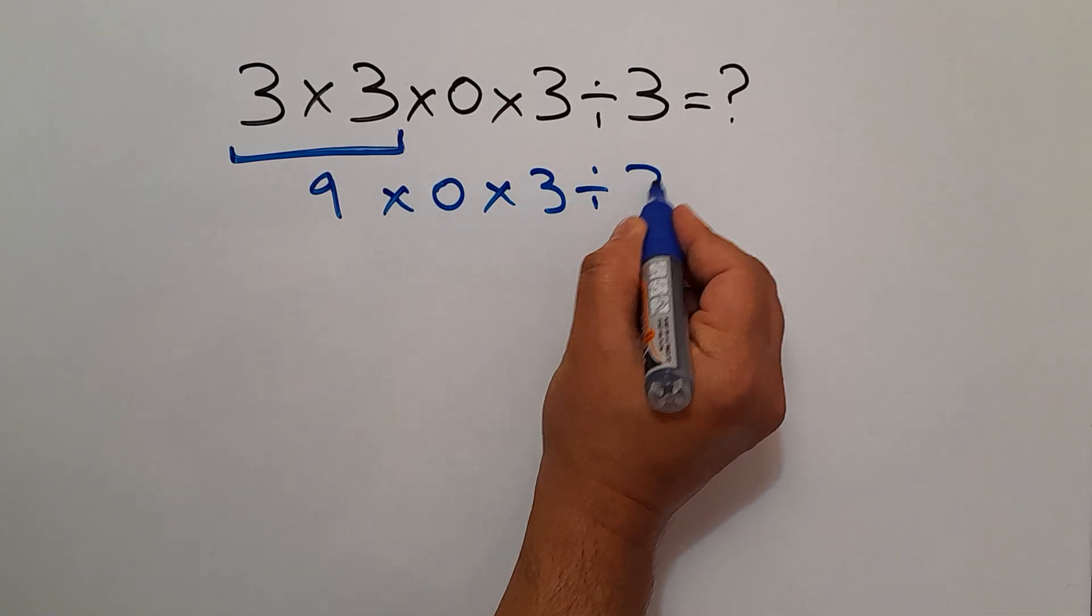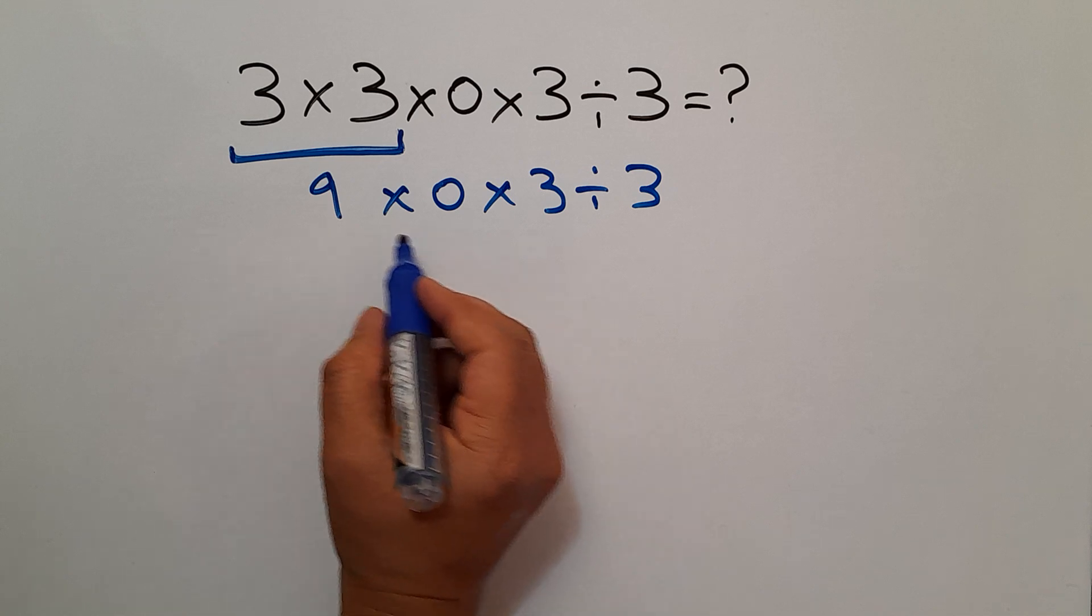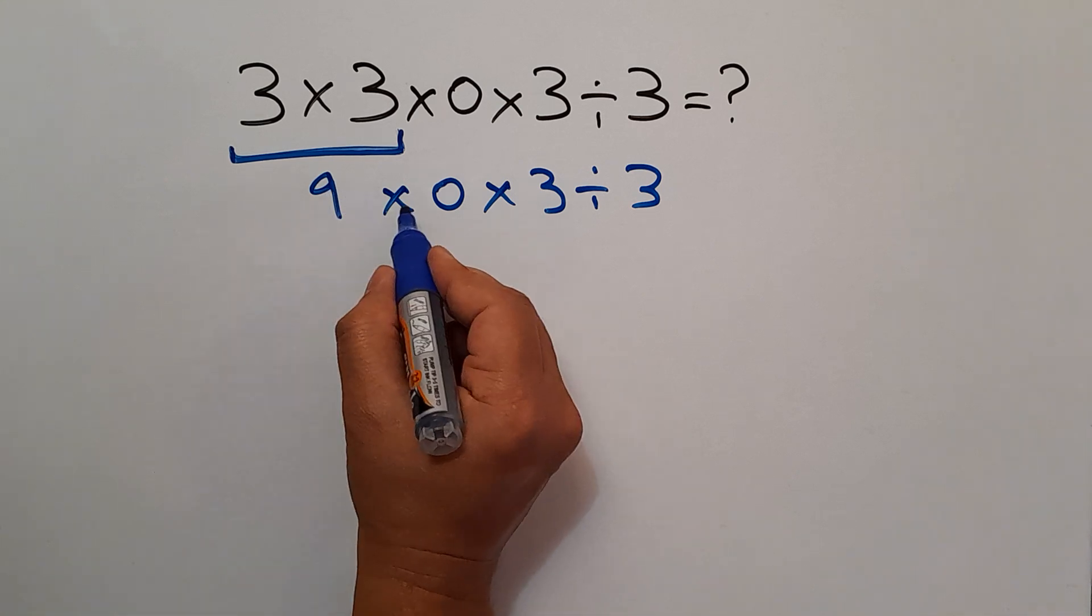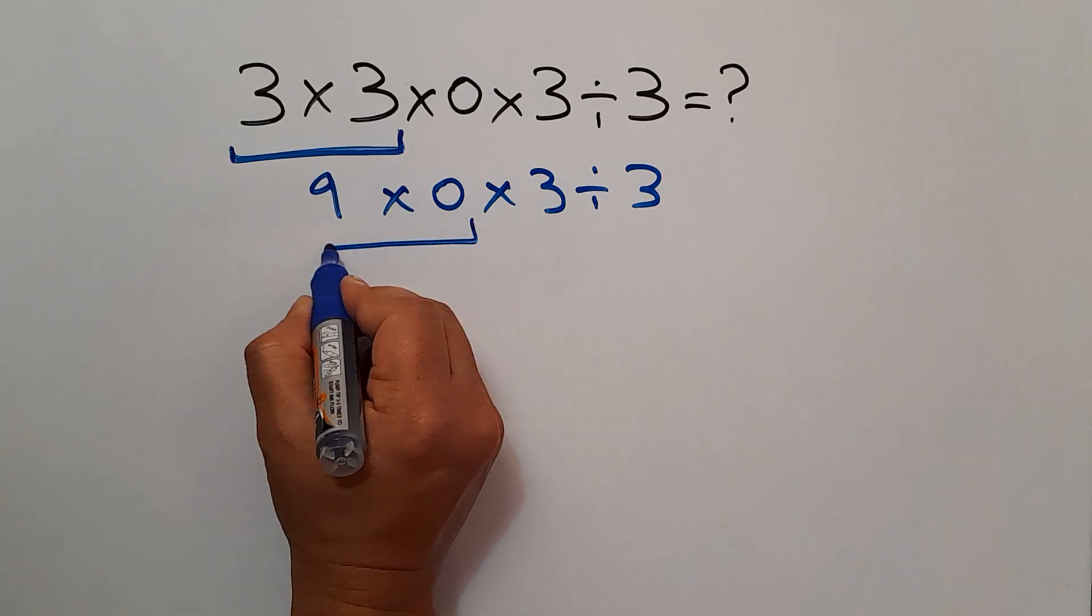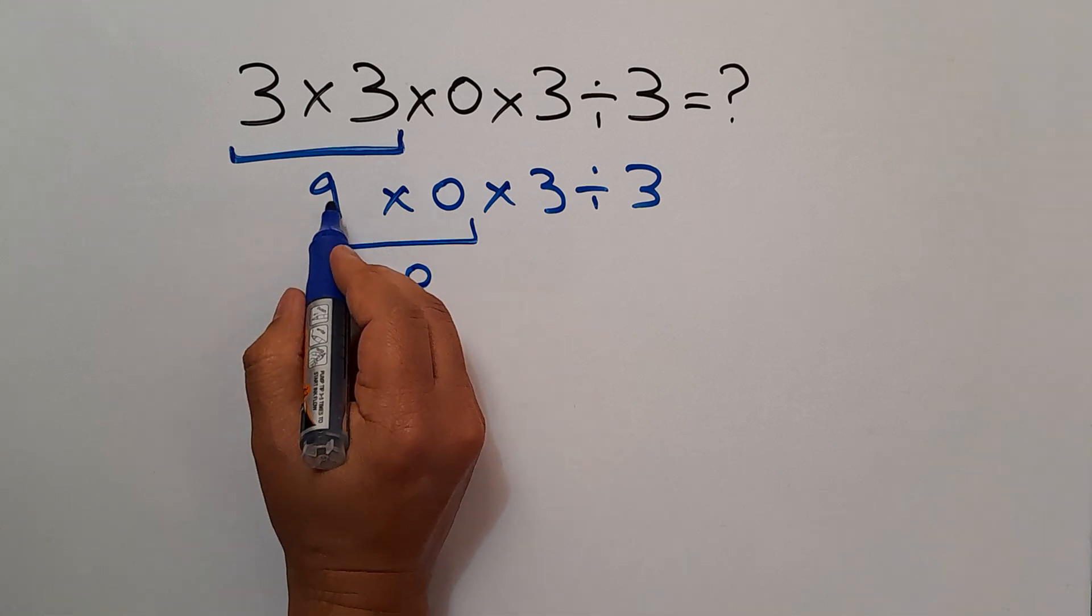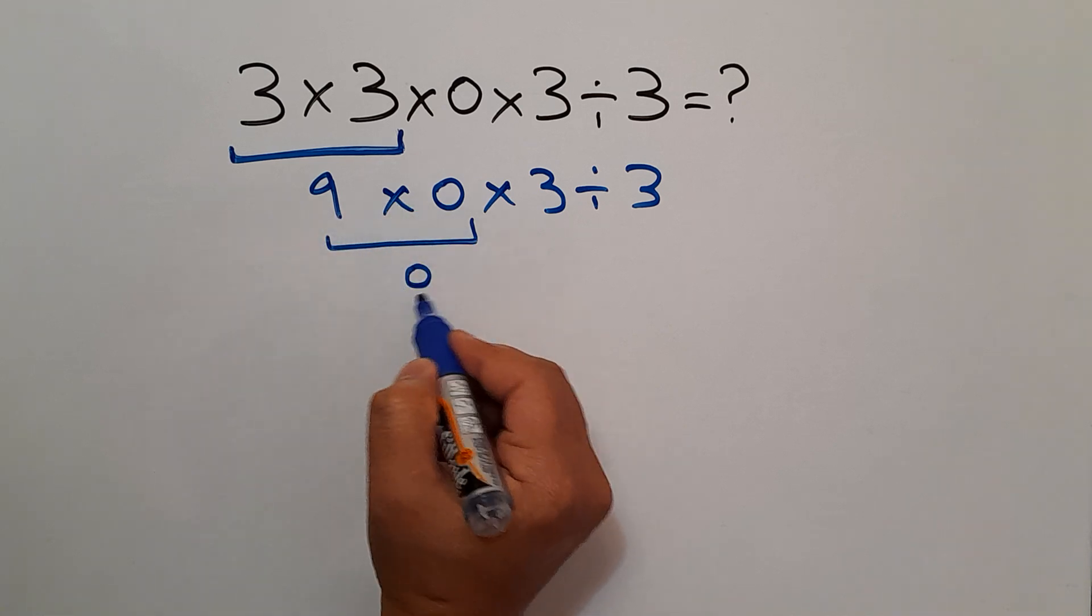Now we do 9 times 3, which equals 0—excuse me, 9 times 0 equals 0—and let's recopy this: times 3 divided by 3.